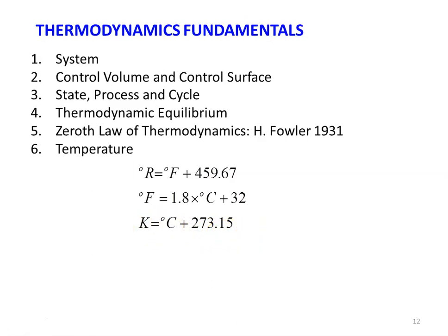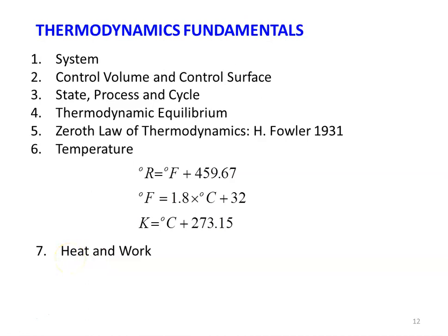Heat and work are both forms of energy and are mutually convertible. When heat is applied to a system, work is produced; when work is given to a system, heat is produced. Sign convention: heat applied to the system is positive; heat rejected from the system is negative. Work given to the system is negative; work done by the system is positive. Heat and work are path functions — they are not properties of the system.